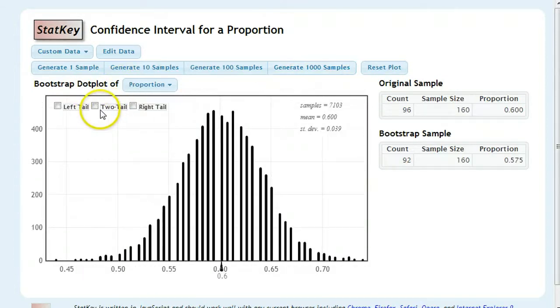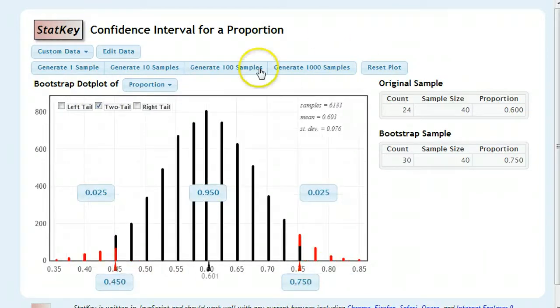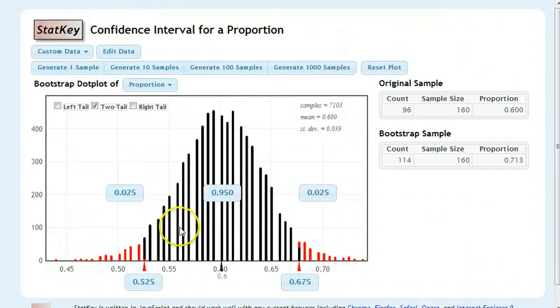Here's what's interesting, though. You click the two-tail button to see where our middle 95% is, and those numbers are different. Back here, we're 0.45 to 0.75. Here, we're 0.52 to 0.67. In fact, our interval actually got half the size going from here to here.